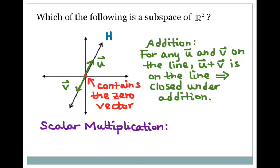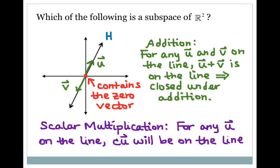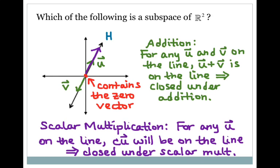Now for the third criteria, scalar multiplication: for any u on the line, cu will be on the line also. Cu would just stretch or compress the vector, and it would remain on the line with the same slope. So H is closed under scalar multiplication. We conclude that H is a subspace of R2.